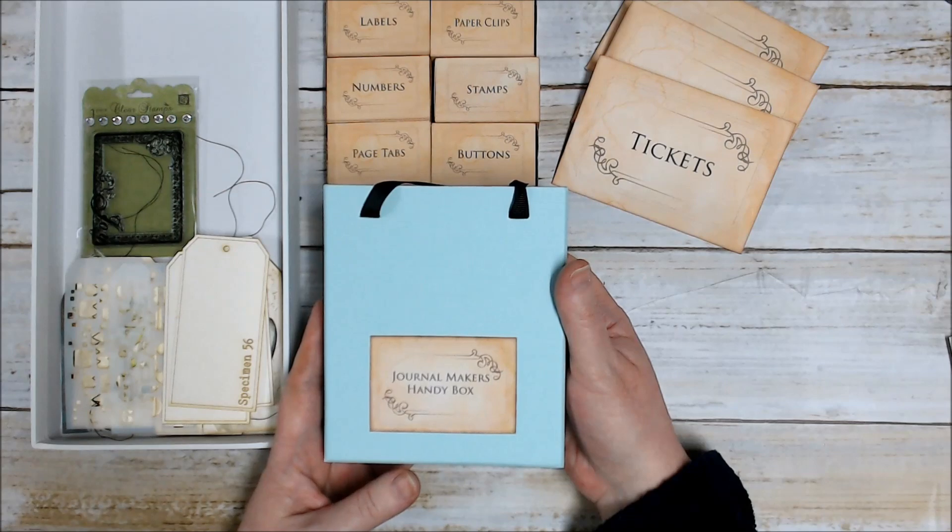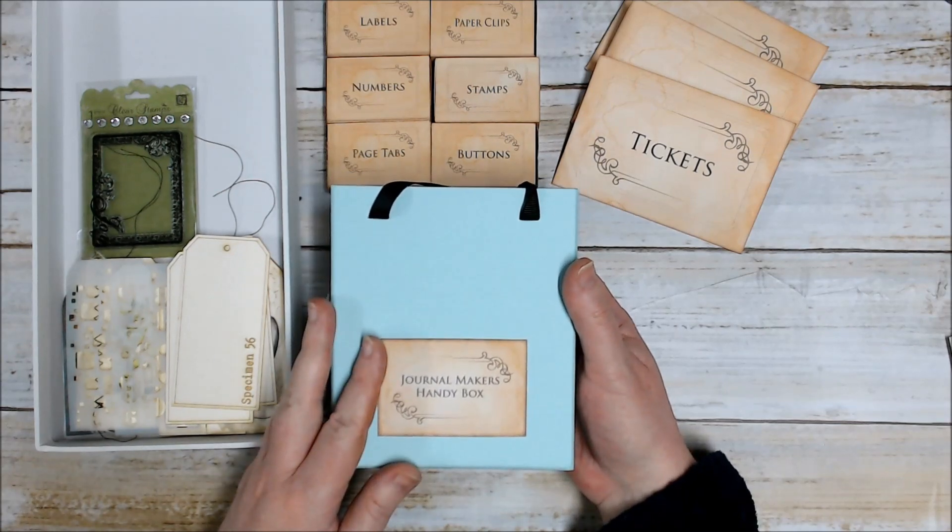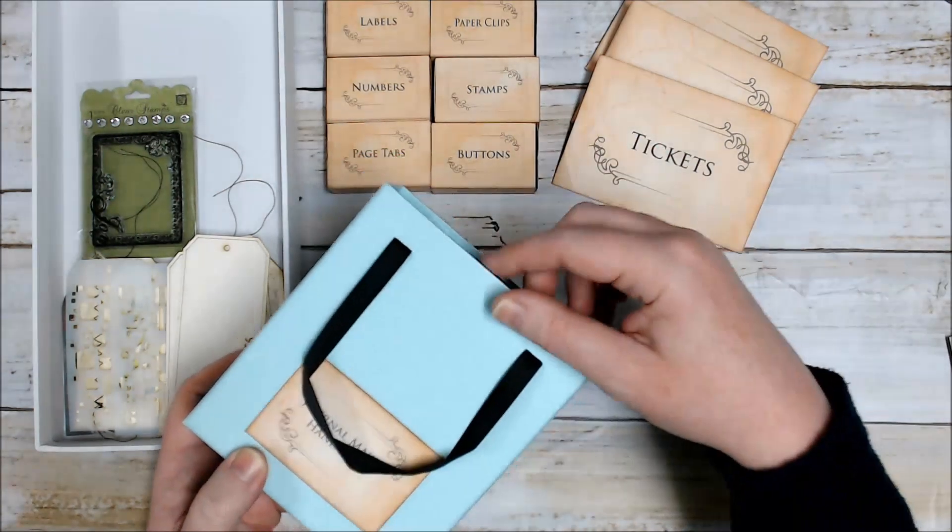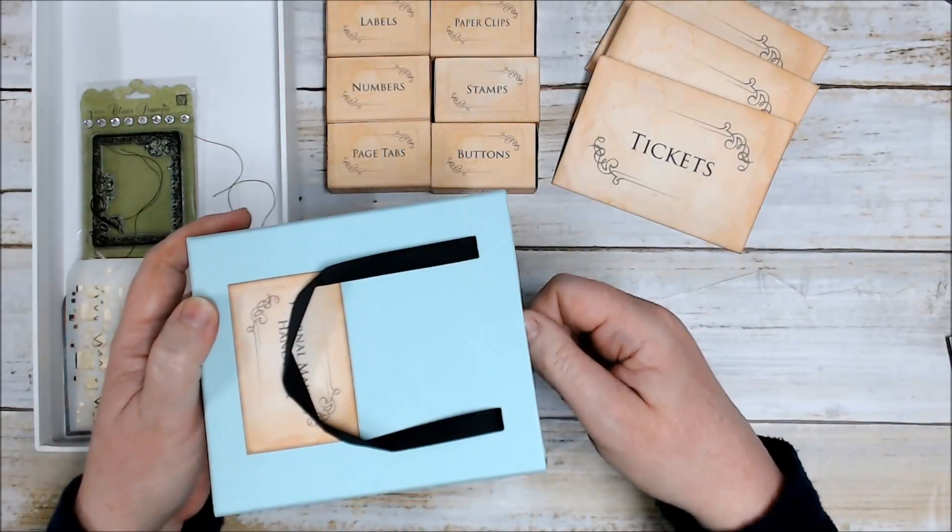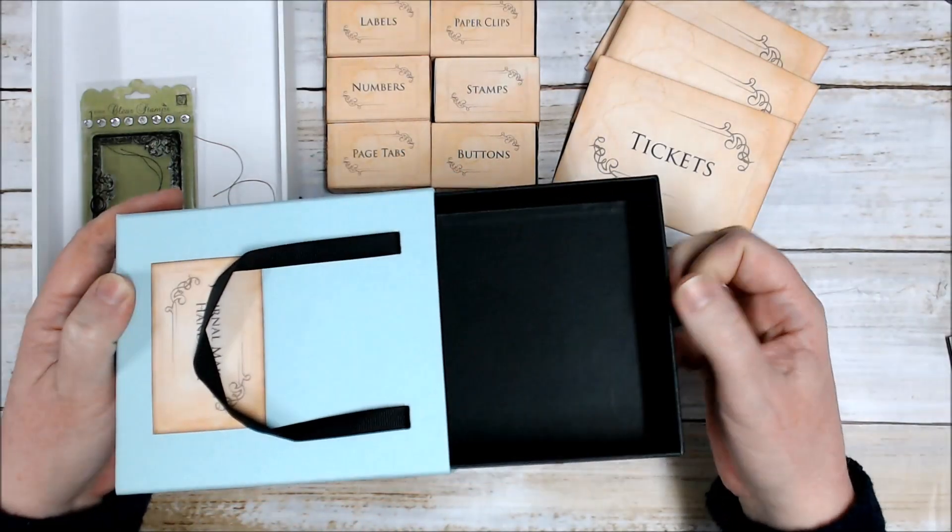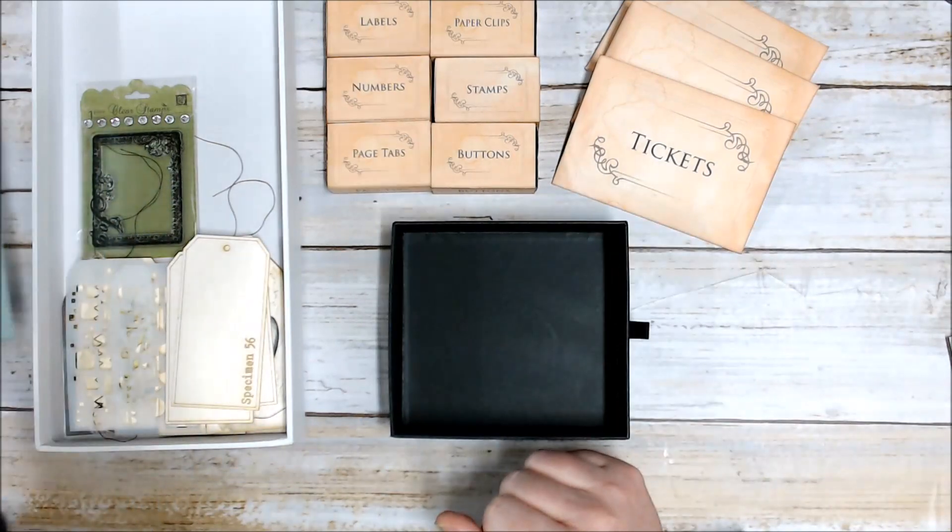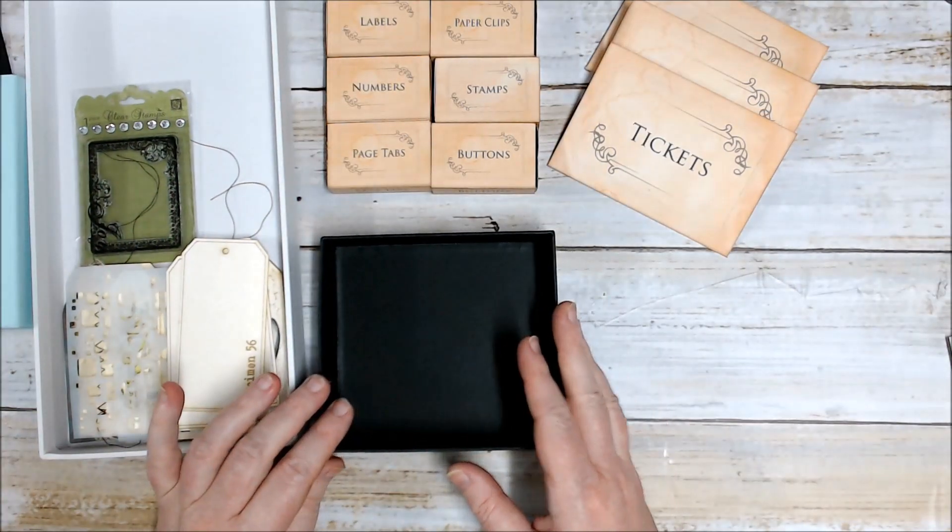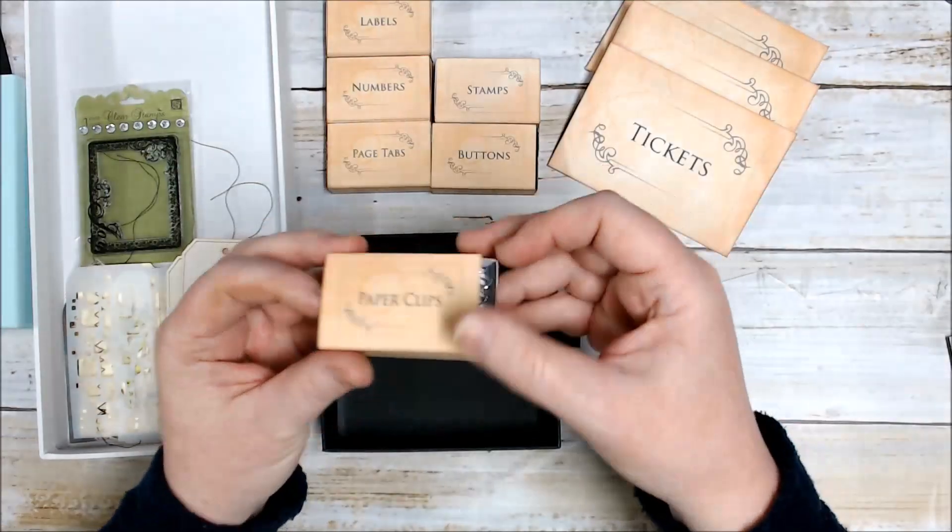For my journal makers handy box today I've chosen this little box which is like a matchbox. It's got a drawer on the inside. And I'm just going to fill that up now with some goodies for my journal makers handy box.